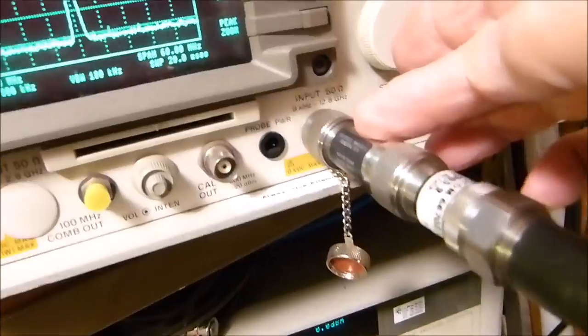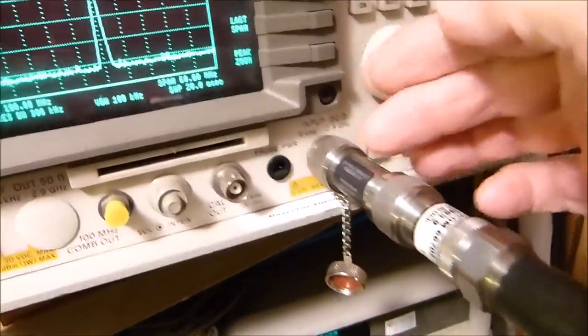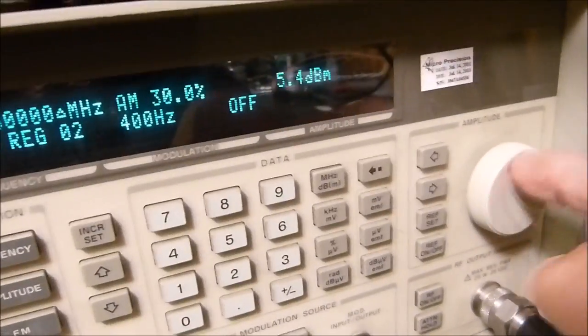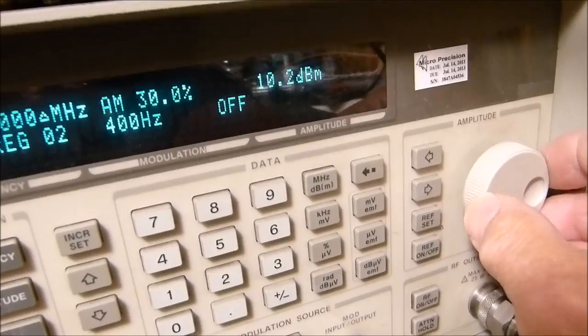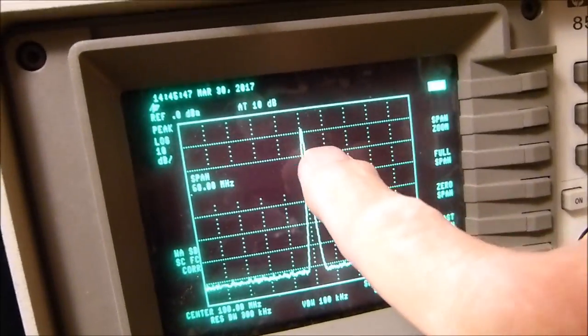I have 20 dB of attenuation here, which brings it down to that second mark. If I took this attenuator out, then the pulse would be up at the very top, but we're going to set this up for 10 dB so we can get the strongest signal we can see. Now we're up just one from the top.